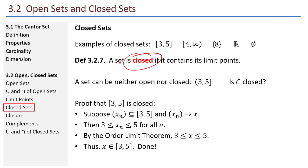We hear this word closed sometimes in other contexts. For example, the set of integers is closed under addition: if you take any two integers and add them, you get another integer — adding integers can't throw you out of the set of integers. Likewise, if I have a closed set, taking limits of sequences formed by elements in that set, that limit can never throw you out of the set.